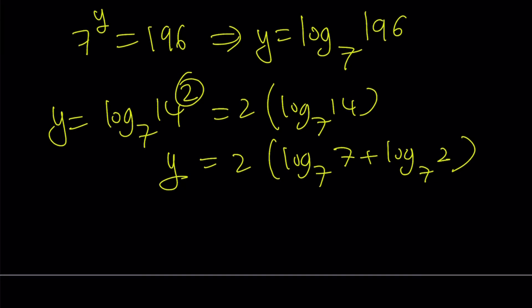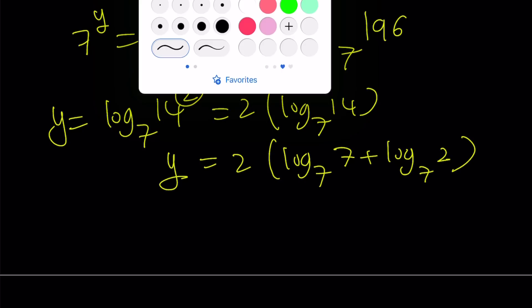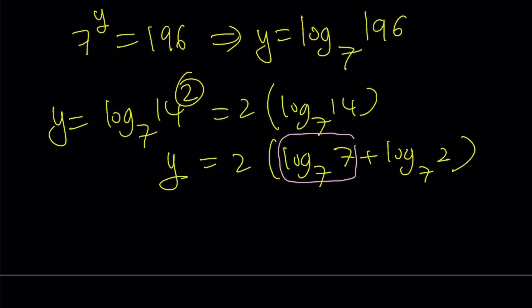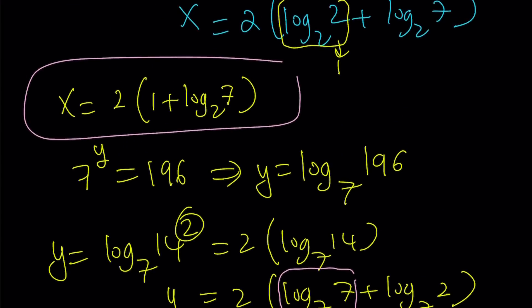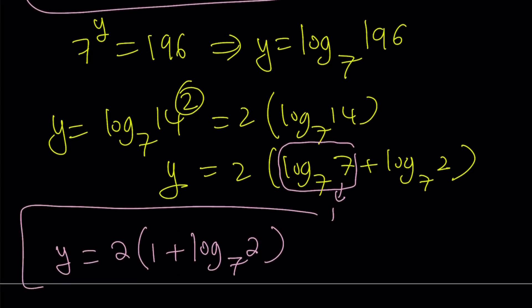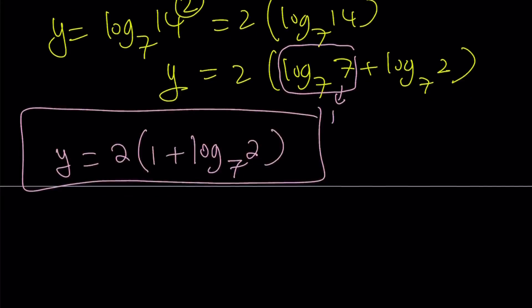Now log 7 in base 7 is just 1. This is 1, right? So we get y equals 2 times the quantity 1 plus log 2 base 7. Awesome. So that is my x value. This is my x value. And this is my y value. And now we're going to go ahead and plug it in.